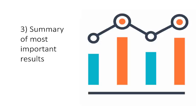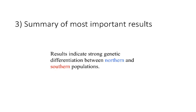Another thing to summarize in your abstract is the most important results. That might look something like: 'Results indicate strong genetic differentiation between northern and southern populations.' That's a really brief summary. We're not giving details about which genes showed differences or anything like that — just saying overall, these results indicate strong genetic differentiation between the populations.